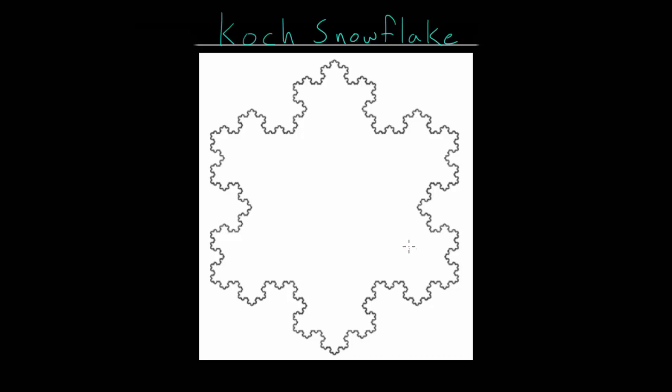One of the interesting things about this snowflake is that the perimeter, the length around the outside of this object, is infinity. It has an infinite perimeter, but the area of this object, the space that it takes up on the inside, is a finite number.